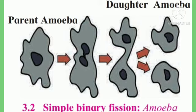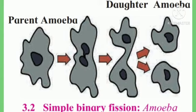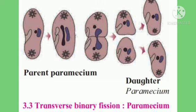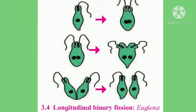Let us see asexual reproduction in unicellular organisms, starting with binary fission. Many paramecia perform binary fission. Prokaryotes such as bacteria, and protists such as amoeba, paramecium, and euglena, as well as eukaryotic cell organelles like mitochondria and chloroplast, perform asexual reproduction by binary fission. In this process, the parent cell divides to form two similar daughter cells. Binary fission occurs either by mitosis or amitosis division. The axis of fission differs in different protists — amoeba divides in any plane due to its lack of specific shape, hence it is called simple binary fission. Paramecium divides by transverse binary fission, whereas euglena divides by longitudinal binary fission.